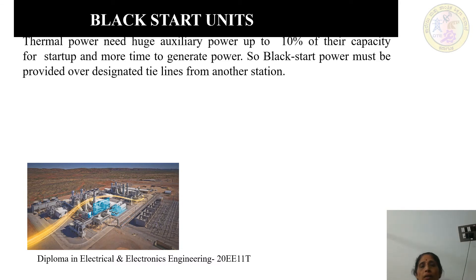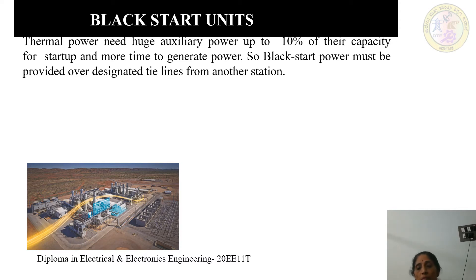So, what are blackstart units? Thermal power plants need huge auxiliary power — up to 10% of their capacity — for start-up, and they need more time to generate power. Normally thermal power plants take 6 to 8 hours to start. Therefore, blackstart power must be provided over the designated tie lines from another station.